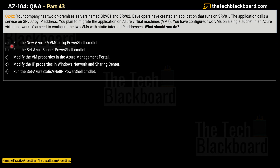The options are: Option A — run the New-AzureRmVMConfig PowerShell cmdlet. Option B — run the Set-AzureSubnet PowerShell cmdlet. Option C — modify the VM properties in the Azure Management Portal. Option D — modify the IP address in the Windows Network and Sharing Center. And Option E — run the Set-AzureStaticVNetIP PowerShell cmdlet.